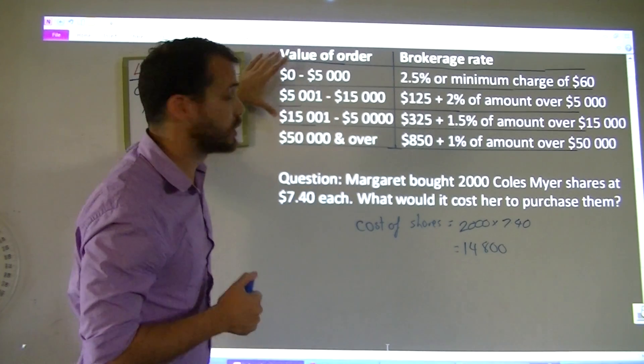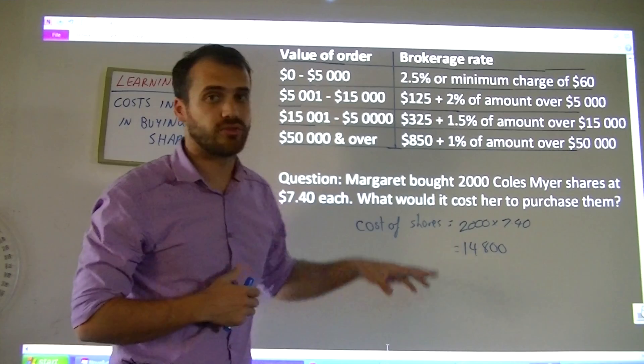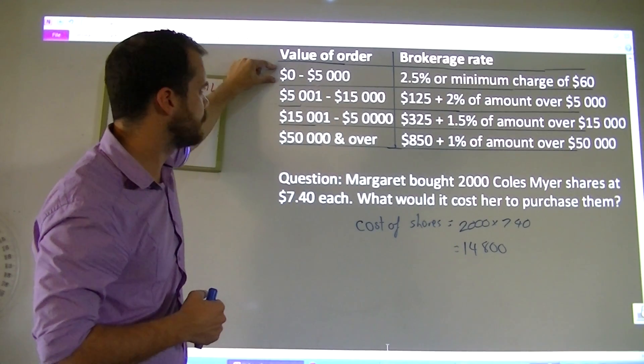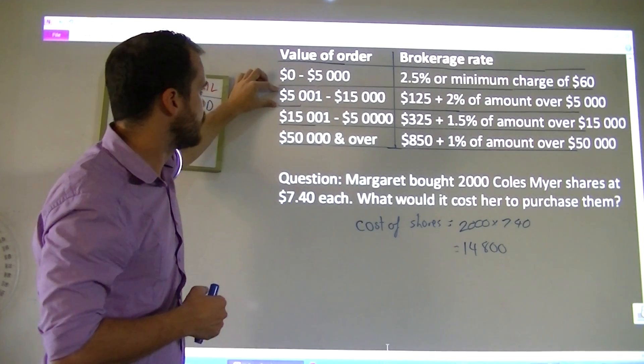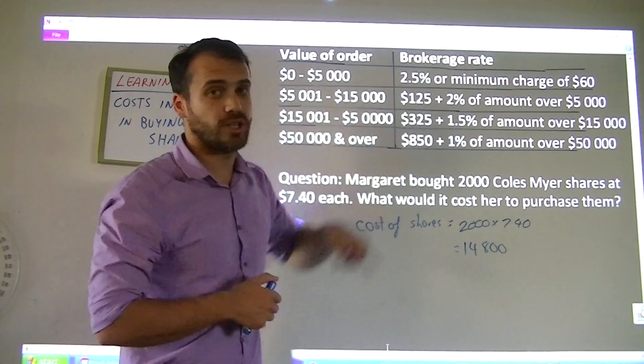Now it's just a matter of going to our table and looking for where $14,800 fits in. Zero to $5,000, not there. $5,000 to $15,000. It fits inside this bracket. Now we just have to follow these instructions.